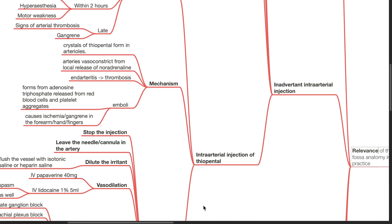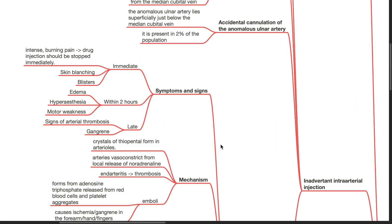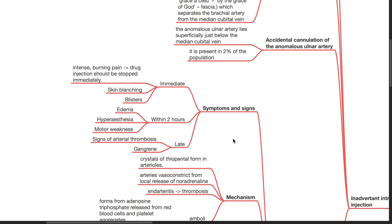Intra-arterial injection of drugs such as thiopental. Symptoms and signs include immediate, within 2 hours and late. Immediate symptoms include intense burning pain. The drug injection should be stopped immediately. Skin blanching and blisters. Within 2 hours, edema, hyperesthesia and motor weakness can occur. Late signs include signs of arterial thrombosis and gangrene.